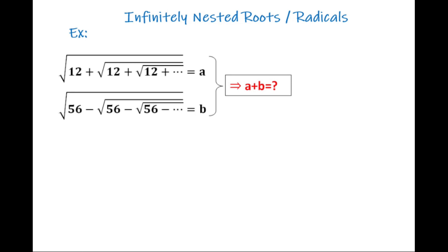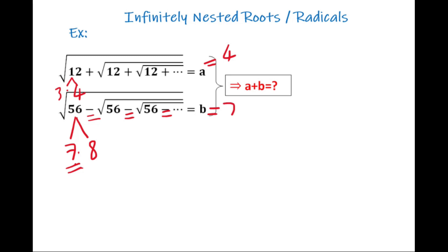Now let's look at a nicer example. We have square root of 12 plus square root of 12 plus... going to infinity, equal to a. And b equals square root of 56 minus square root of 56 going to infinity. We need to find a plus b. Since 12 factors as 3 times 4 with a plus sign, a equals the bigger multiplier, which is 4. Since 56 factors as 7 times 8 with a minus sign, b equals the smallest multiplier, which is 7. So a plus b equals 4 plus 7, which is 11.